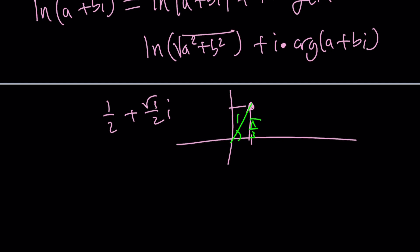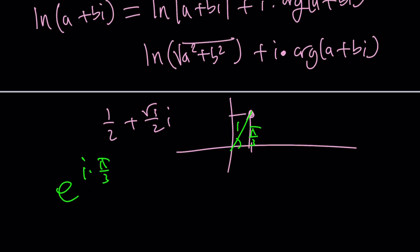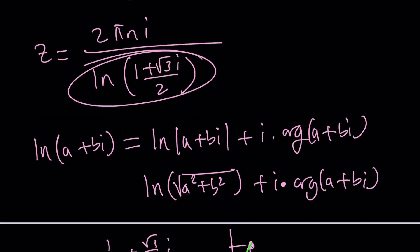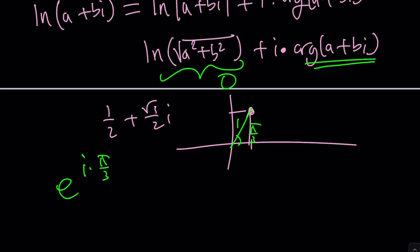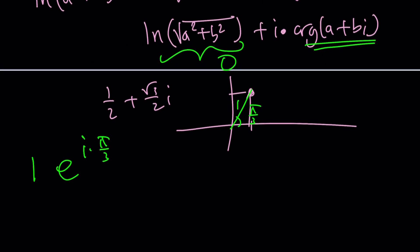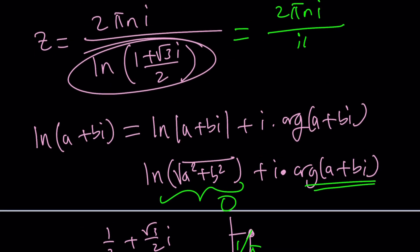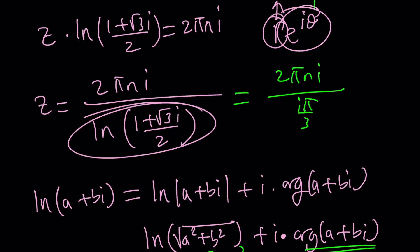So our number can be written as 1 times e to the power i pi over 3 which is e to the power i pi over 3. So now we can go ahead and replace it with that but when you ln it it's ln 1 is going to be 0 that's a real value to ln and this is going to be pi over 3 so now our expression is going to be 2 pi ni divided by i pi over 3 because we are ln this remember so when you ln this you're going to get i pi over 3. So we're going to replace this with i pi over 3 and this simplifies a great deal.